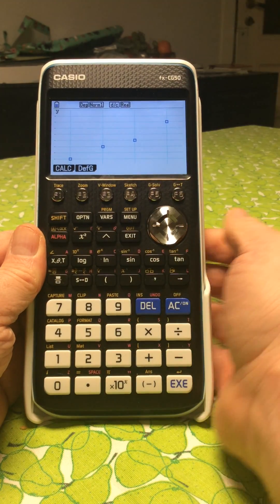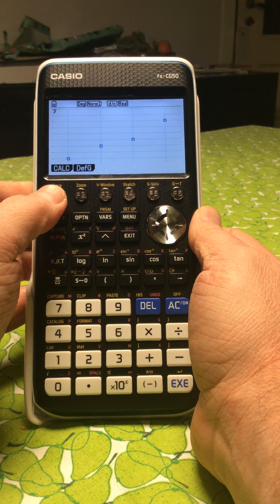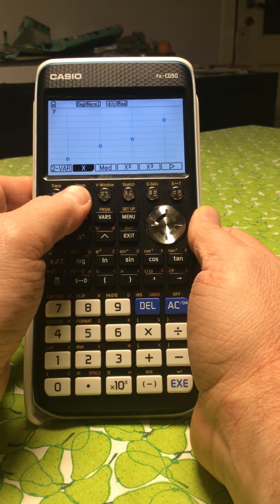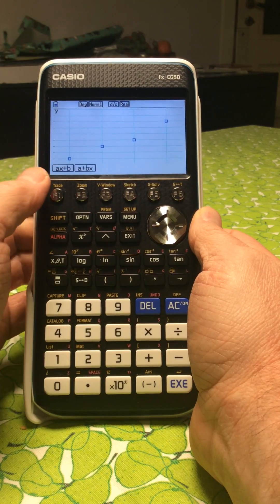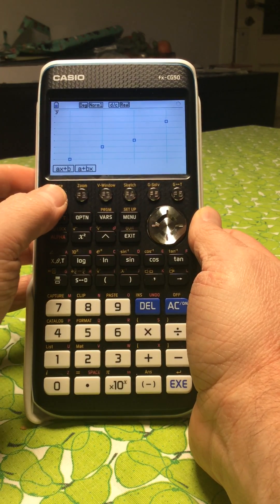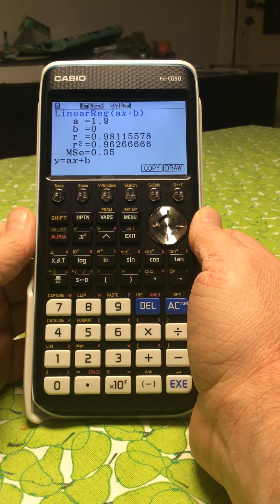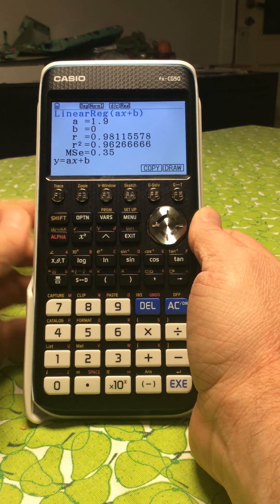To do the regression on that, you press calc, press x. Usually we use ax plus b, so press ax plus b. You get that a equals 1.9, b equals 0, and r equals 0.98, so it's a very good correlation in this case.